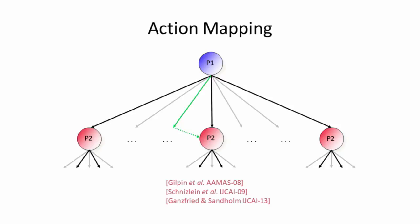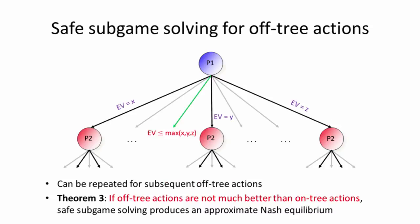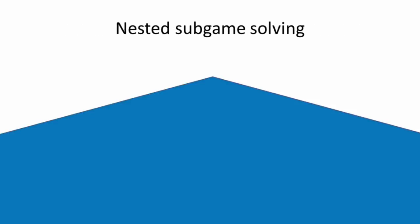But safe sub-game solving gives us an alternative to this. Rather than rounding it to a nearby action, we can come up with a sub-game in response to that action uniquely and solve it in real time. And we could try to make the opponent no better off for having chosen that action than one of the actions that are already in our abstraction. And actually, we have a theorem that says if the off-tree actions, that is the actions that are not in our abstraction, are not much better than the actions that are already in our abstraction, then safe sub-game solving will produce an approximate Nash equilibrium.